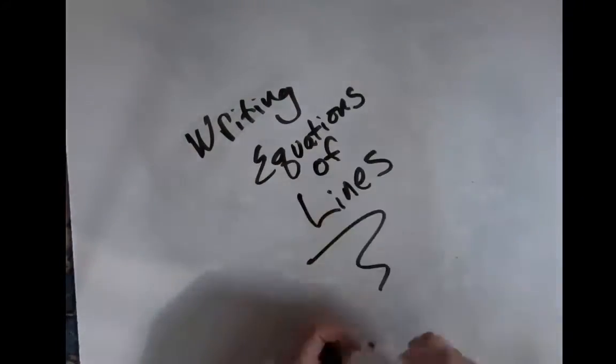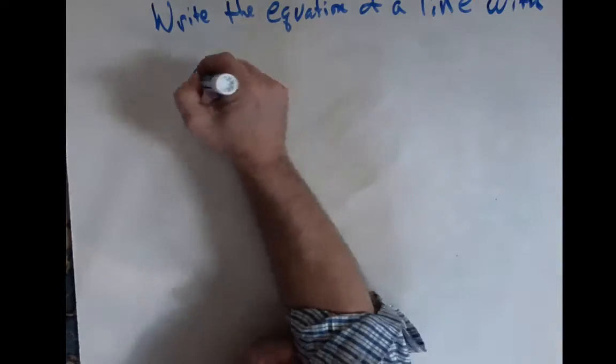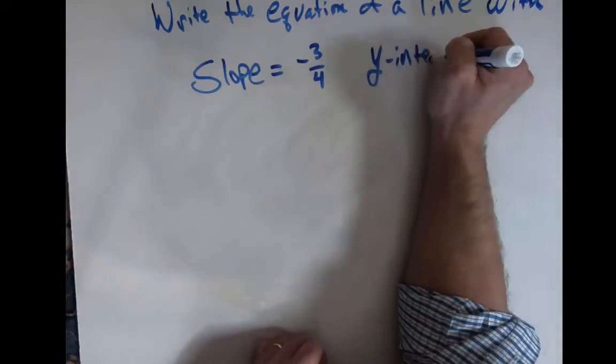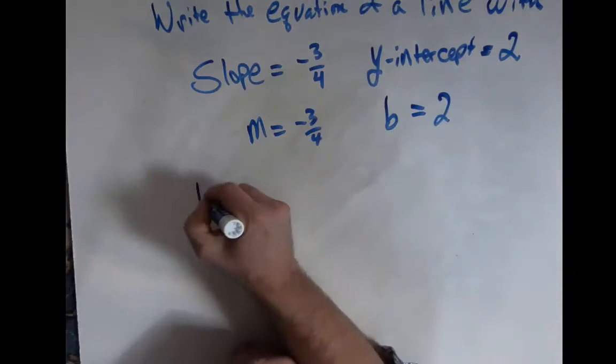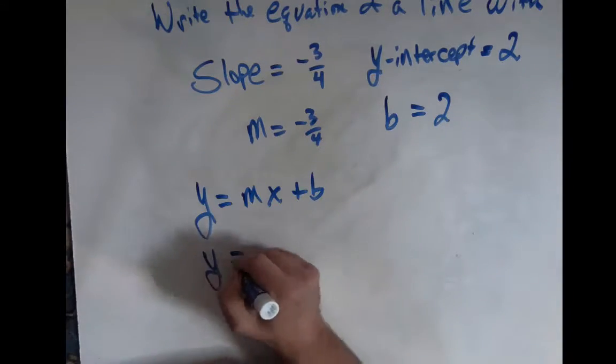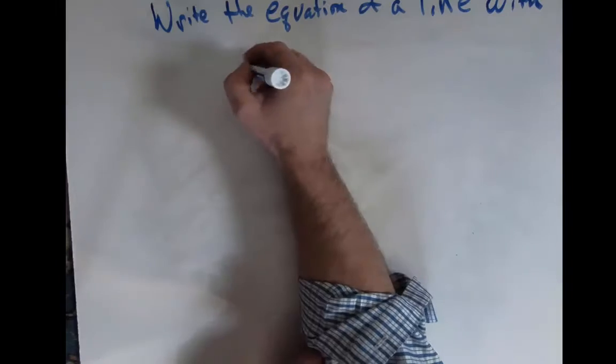Let's talk a little bit about writing equations of lines. So we want to write the equation of a line that has a slope of negative 3 fourths and a y intercept of 2. So m is negative 3 fourths and b is 2 in the equation y equals mx plus b. We simply plug in the m and the b and we're done.